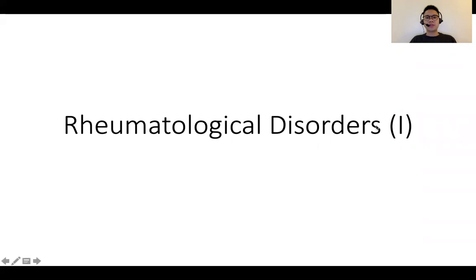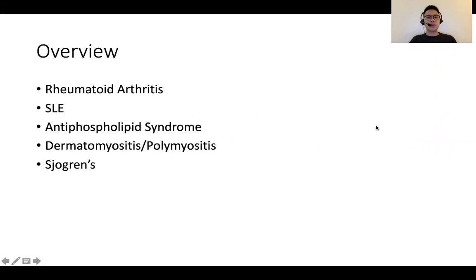Hi everyone. Today we'll be going through the first part of the Rheumatological Disorders series. We'll be covering rheumatoid arthritis, systemic lupus erythematosus, antiphospholipid syndrome, dermatomyositis and polymyositis, and Sjogren's syndrome.